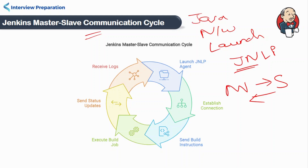By leveraging the master-slave architecture, Jenkins can handle large and complex build jobs efficiently, making it the most popular choice for continuous integration and continuous delivery in software development.